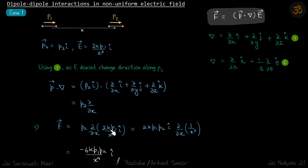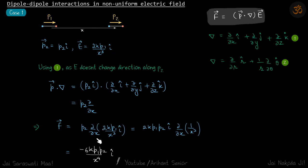Inside we are left with 1/x³, and ∂/∂x of (1/x³) gives minus 3/x⁴, which yields our answer with a negative sign on î-cap, meaning the force is attractive. In Cartesian coordinates î-cap is a constant so we could take it out. Later we'll see that if there is an r-cap or θ-cap and we differentiate with respect to θ, we cannot take the unit vector out. This is Case 1, the simplest case.